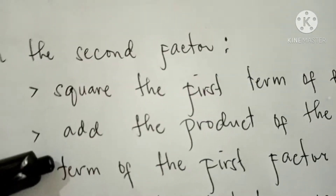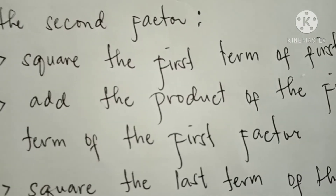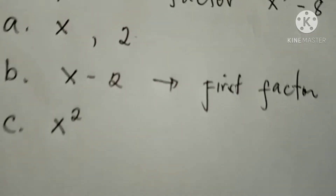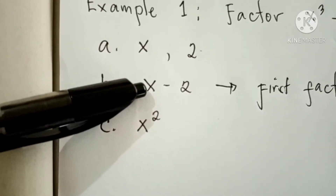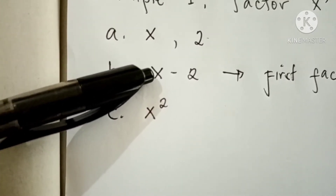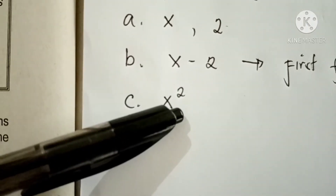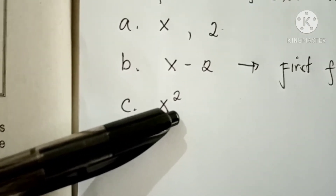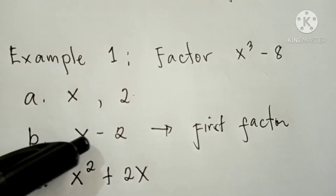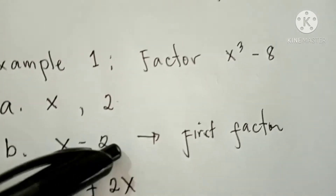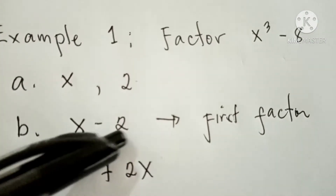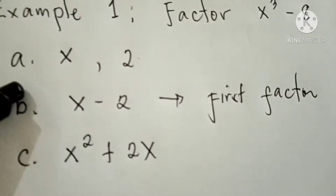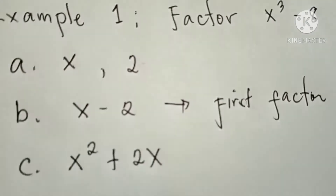Next, add the product of the first and second term of the first factor. We multiply the first and second term — disregard the negative sign. Multiplying the first and the second term: x times 2 equals 2x. So the result is 2x.